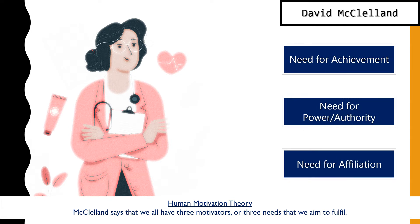The three needs are: achievement, authority, and affiliation. The need for achievement means looking to accomplish things, setting higher targets, and being motivated by challenging tasks. The need for power means needing to win arguments, show authority, and demonstrate dominance in conversations.